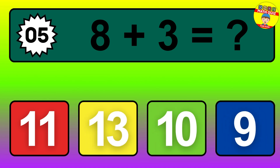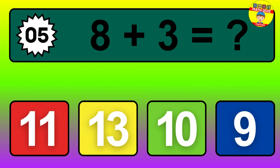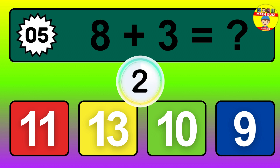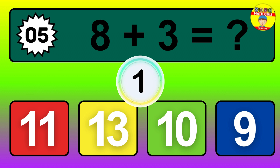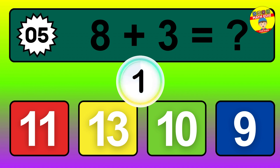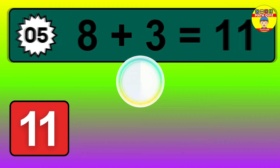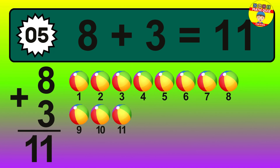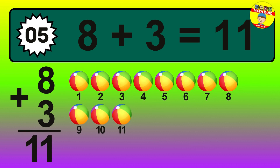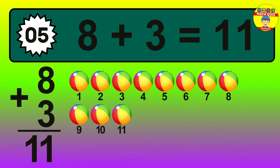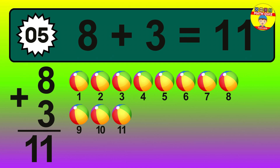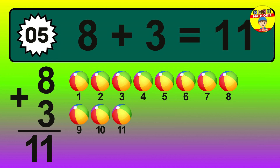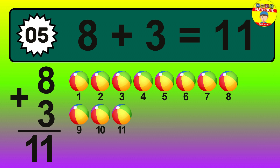Question 5. 8 plus 3 equals what? So the answer is 8 plus 3 is 11. Let's count it. 1, 2, 3, 4, 5, 6, 7, 8, 9, 10, 11.